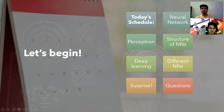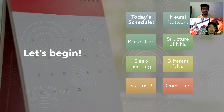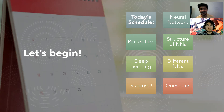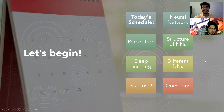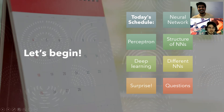Today's schedule: we'll be talking about neural networks, the perceptron structure of neural networks, deep learning, different types of neural networks, and a surprise at the end — stick around for that. And please pay attention, because you'll know why.